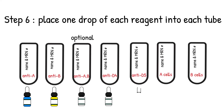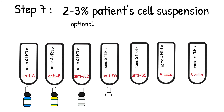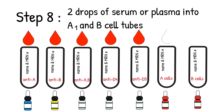Step 6: Place one drop of the reagents into each clearly labeled tube. Step 7: Make a cell suspension of about 2 to 3 percent patient red blood cells and put one drop of that 2–3% suspension into the tubes labeled anti-A, anti-B, and anti-A,B if you choose to do so — it's optional in routine testing but plays an important role in neonate testing. For D4 and D5: add 2 drops of serum into the tubes labeled A1 cells and B cells.